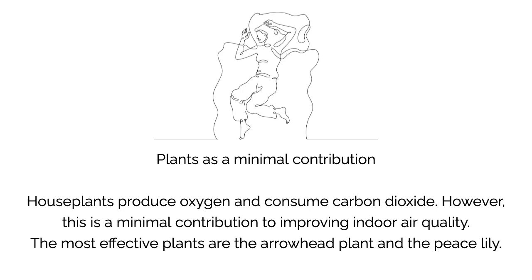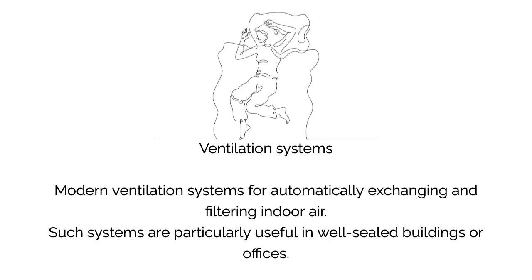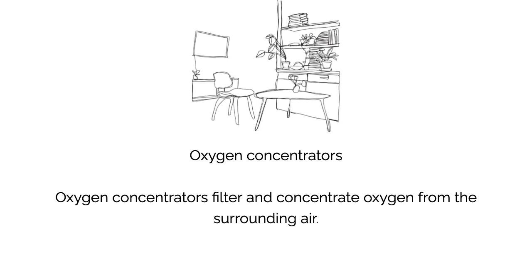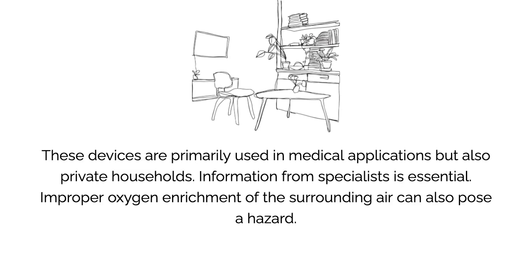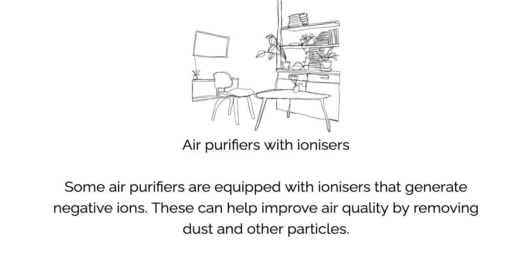Houseplants produce oxygen and consume carbon dioxide, but this is a minimal contribution to improving indoor air quality. The most effective plants are the Arrowhead plant and the Peace Lily. Modern ventilation systems can automatically exchange and filter indoor air and are particularly useful in well-sealed buildings or offices. Oxygen concentrators filter and concentrate oxygen from the surrounding air — primarily used in medical applications but also in private households. Some air purifiers are equipped with ionizers that generate negative ions, which can help improve air quality by removing dust and other particles.